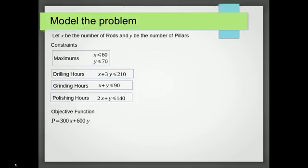So here we've modeled the problem. The first thing I've done is to define the variables. So x is the number of rods and y is the number of pillars. And then we've set out our constraints. So the first constraint was to do with the maximums and so that gave us that x had to be less than or equal to 60, y had to be less than or equal to 70.